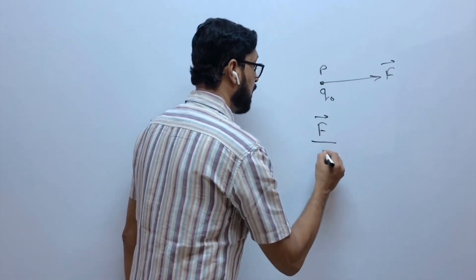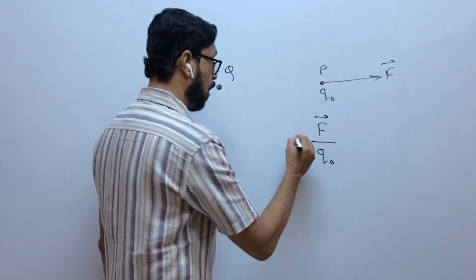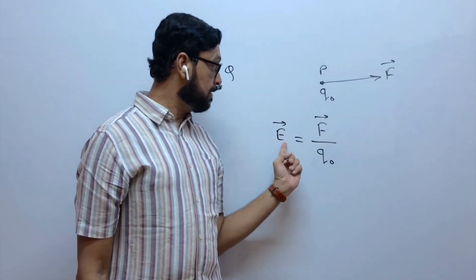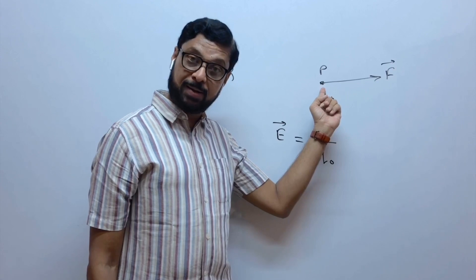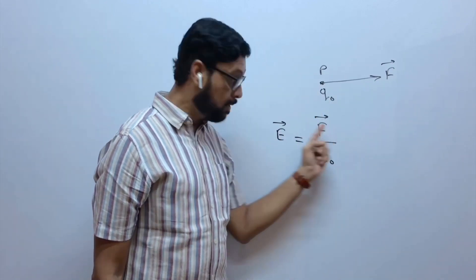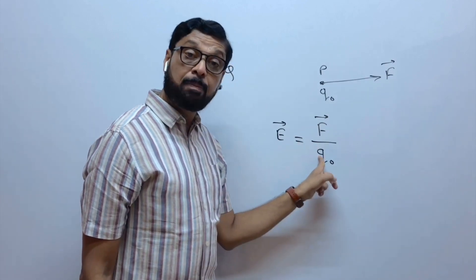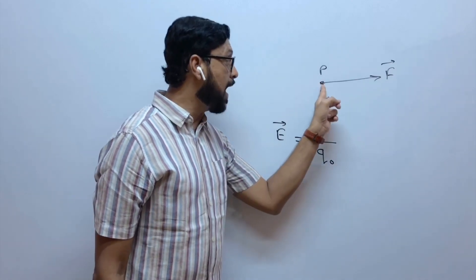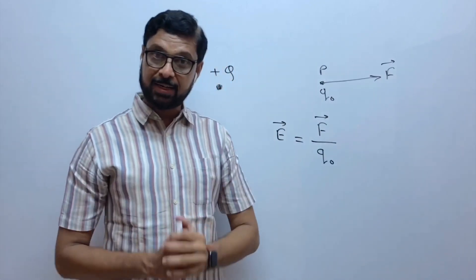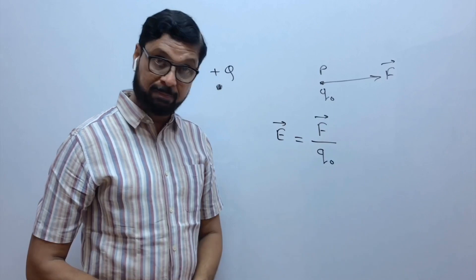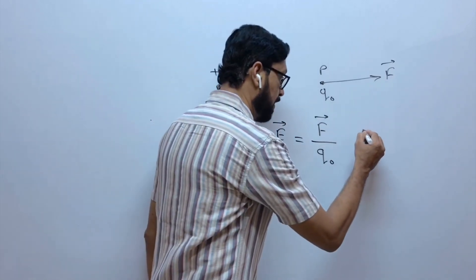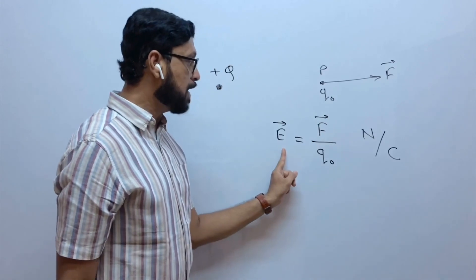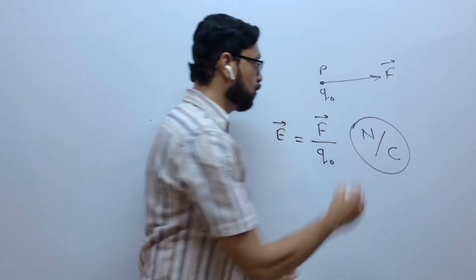That force per unit test charge is called electric intensity at that point. So, electric intensity at any point in the electric field is defined as the force acting per unit positive test charge kept at that point. That is the definition of electric intensity. And from this definition, the SI unit of electric intensity will be Newton per coulomb.